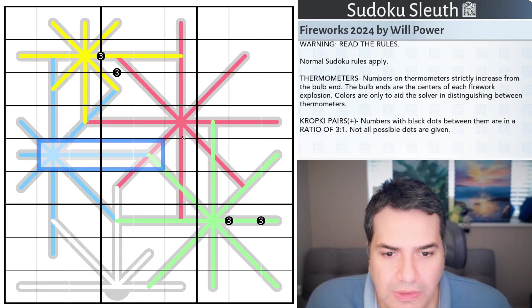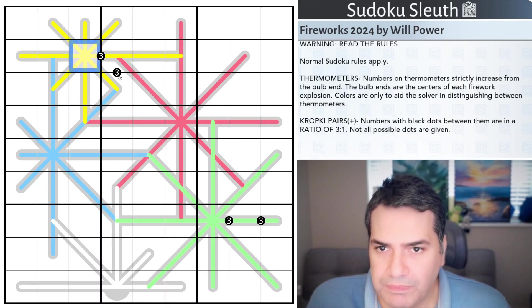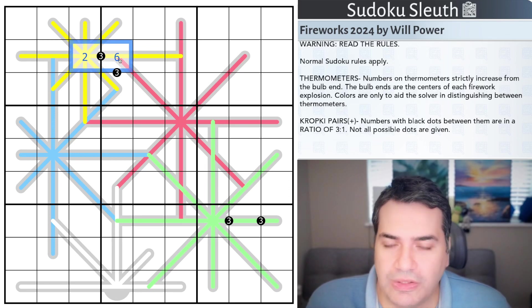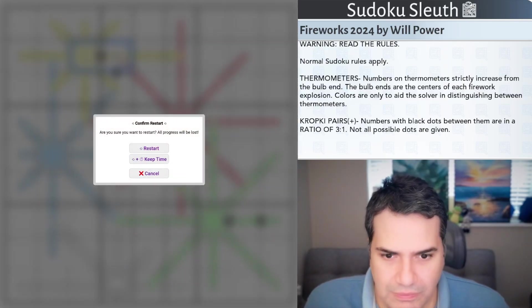Then Kropki pairs. And this is the twist on the normal rule sets. Numbers with a black dot between them are in a ratio of three to one. And not all possible dots are given. This cell here is a two. This would have to be a six. There are no other options because they have to be. One of them has to be three times the other cell. So that's all the rules we have for today. And let me just crack on. And sorry about the mess up with the recording.